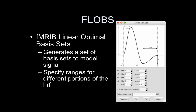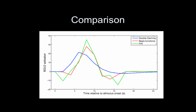If you use FSL, they have a GUI called FLOBS that you can use to generate these basis sets. Here's a comparison that illustrates the bias-variance tradeoff well. The blue is the canonical HRF — the double gamma — fitted to the data. The green is the FIR model, and the red is the constrained basis functions. You can see the bias: the double gamma had a specific assumption about when the peak would occur, and clearly the peak is actually a little bit later, so it misses that and is slightly smaller. The green has the highest variance and is the most wiggly. The red is in the middle, with the least bias and the least variance.